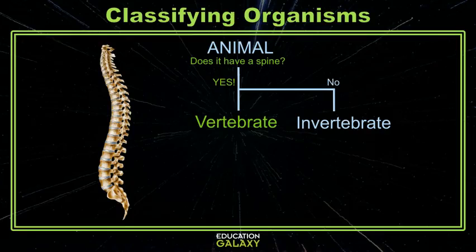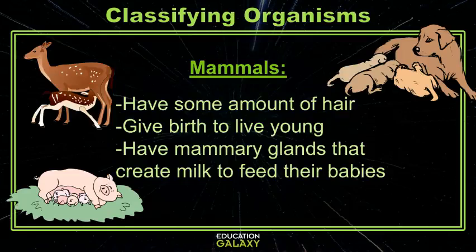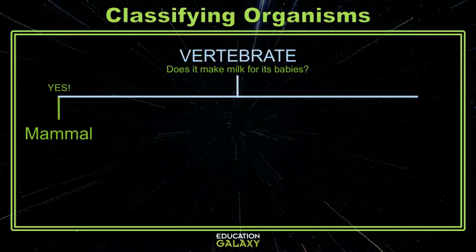We can sort our vertebrates into even smaller classes. We can make a mammal class — these are all animals that have hair, give live birth, and most importantly have mammary glands, which allow them to make and feed their milk to their babies.